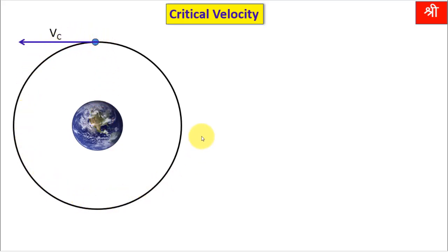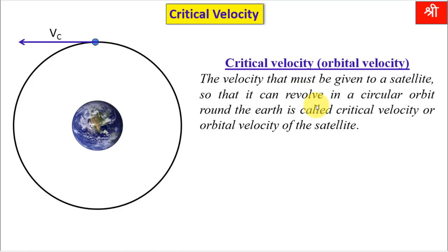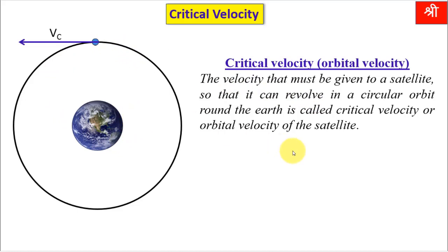To derive the expression for critical velocity, first see the definition: the velocity that must be given to a satellite so that it can revolve in a circular orbit around the Earth is called critical velocity or orbital velocity of the satellite.